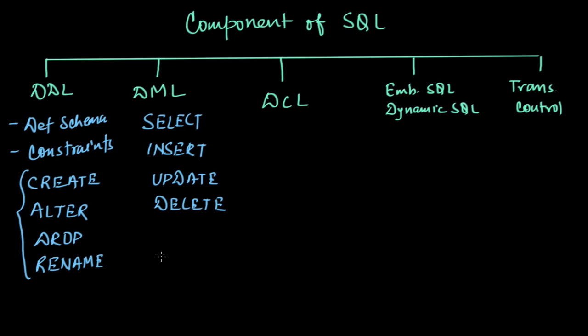We have Data Control Language. As the name suggests, it controls the data. It is basically responsible for control to access and authorization. The commands under this component are GRANT, which is used to grant permission, and REVOKE, which is used to revoke permission—whatever permission I have given, I can get it back.